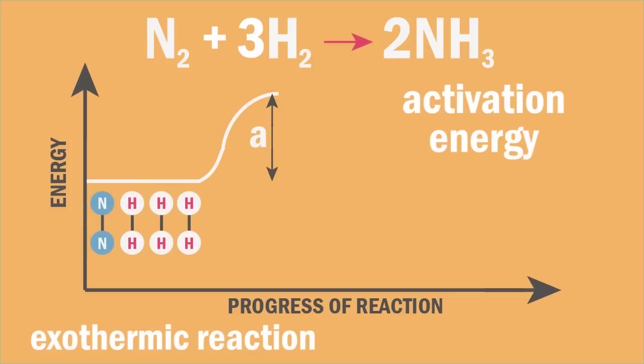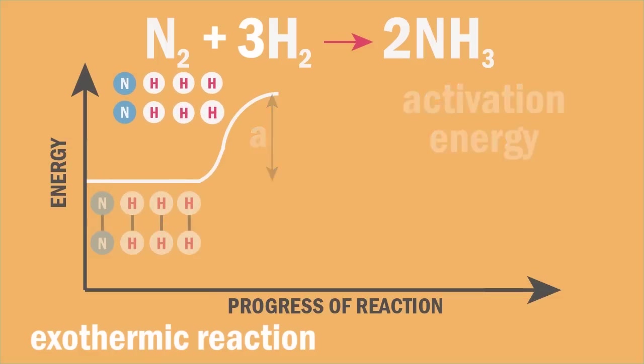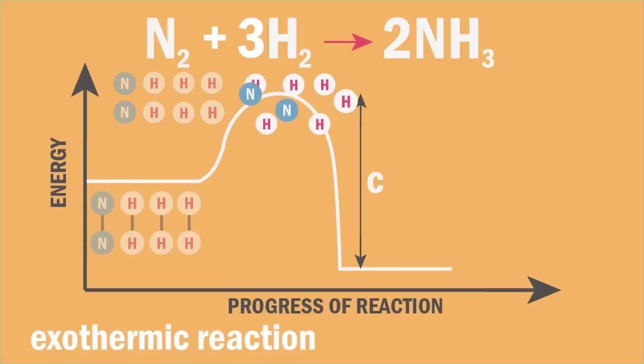Again A is the activation energy which is the energy taken in to break the N-N and the three H-H bonds in the reactants. C is the energy given out when the six new N-H bonds make to form the products.